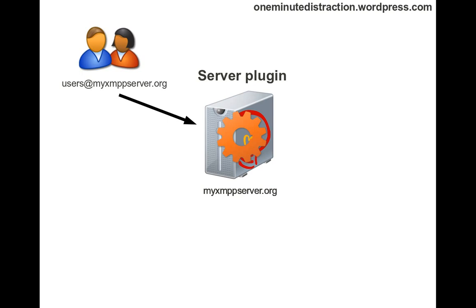The services actually run inside the XMPP server's process. So when the user wants to look up the service, the user will send a disco item query to the server, and then the server will return a list of services — including the services that we have provided — back to the user.